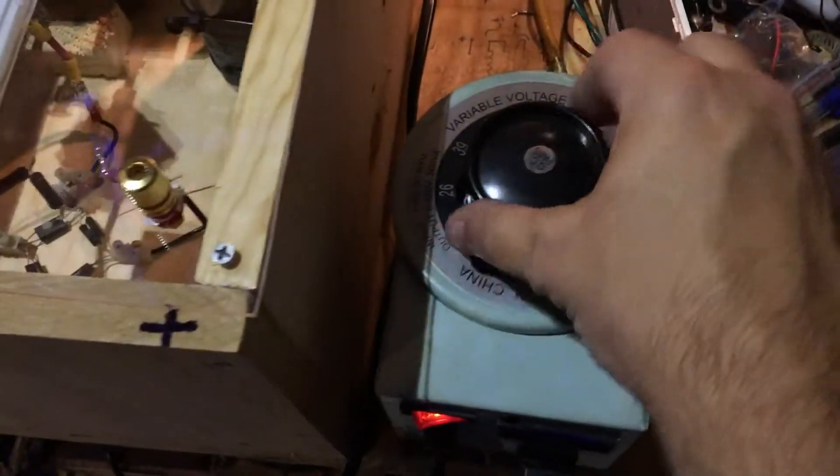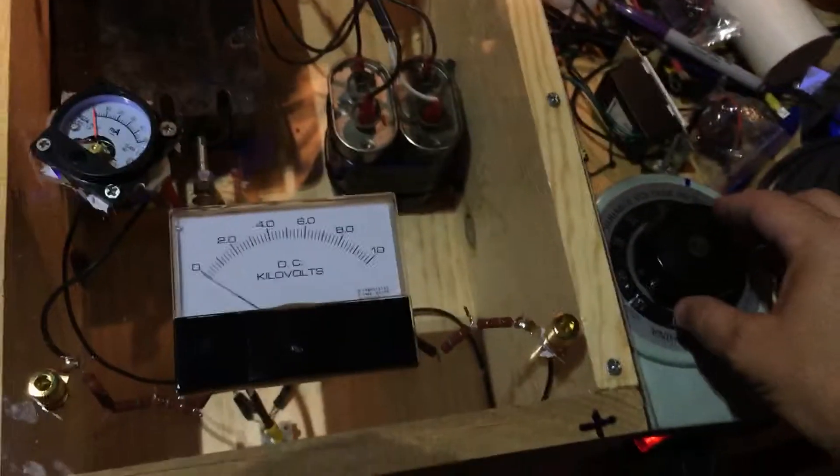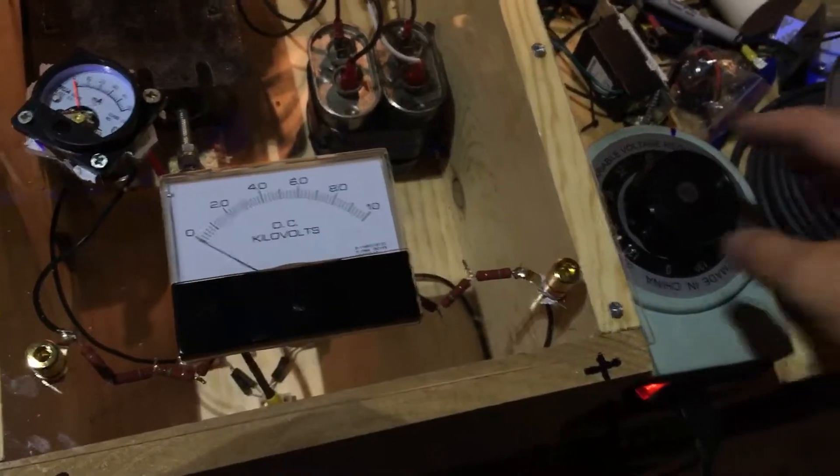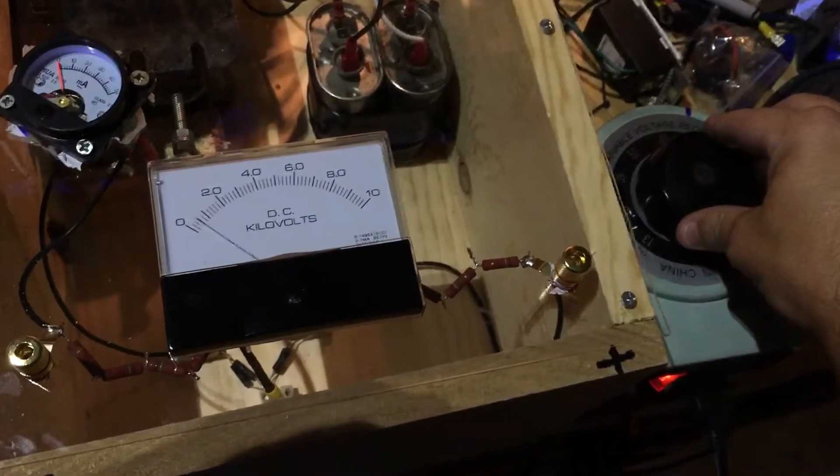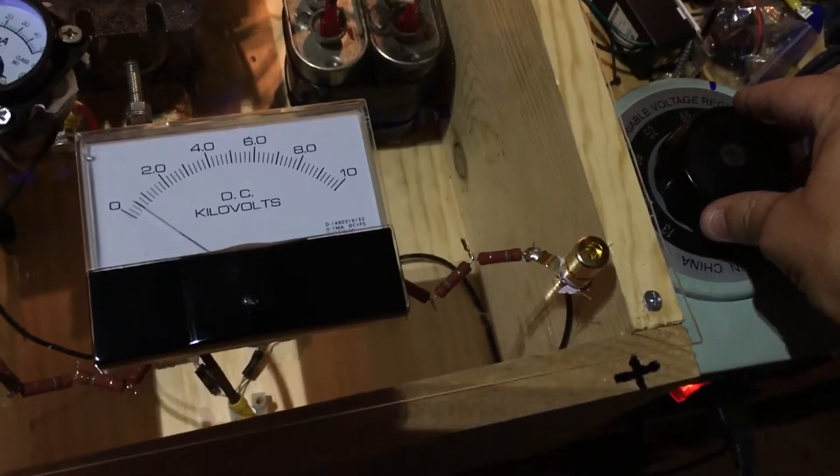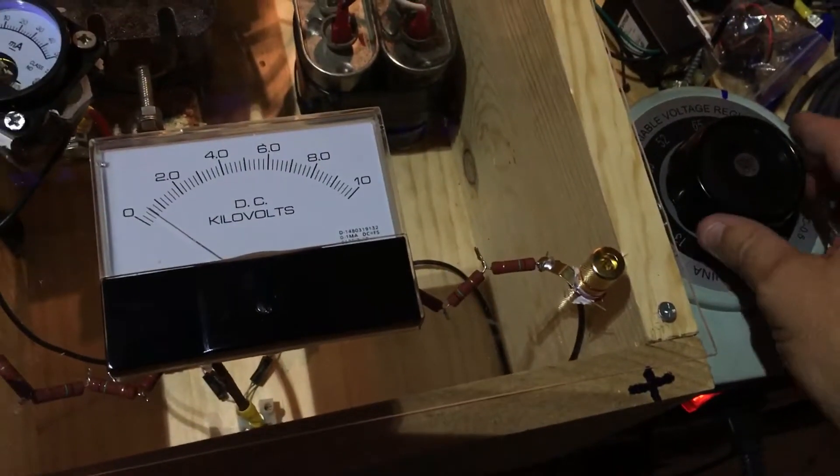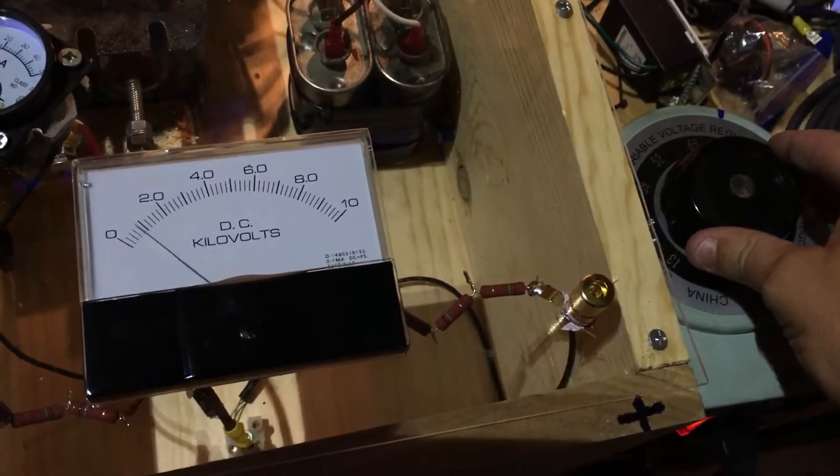But let's go ahead and walk through. So we'll turn the Variac back to zero. And let's see if I can get it all on here. So watch the voltage here. You can see you got pretty decent resolution. You don't have to turn very high or very quickly to be able to get a lot of kilovolts DC, right.